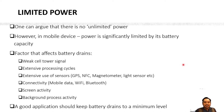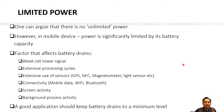You must ensure that your application can release the lock on the hardware whenever possible in order to limit battery drain. Extensive use of sensors will also consume battery. A good application should keep battery drain to a minimum level or intelligently anticipate what the user would do with the application.